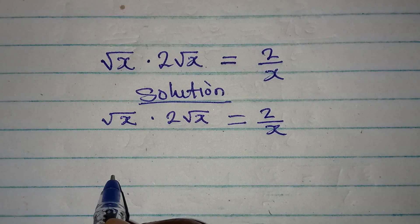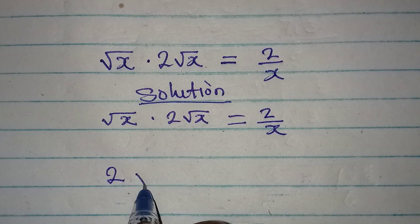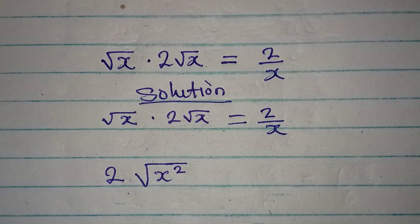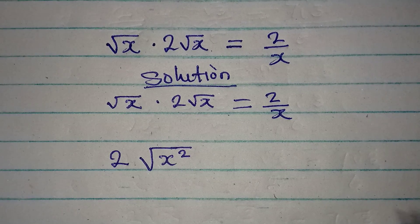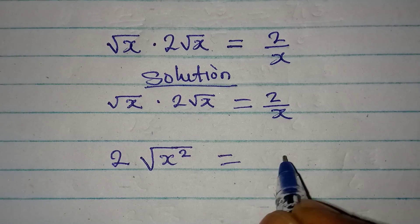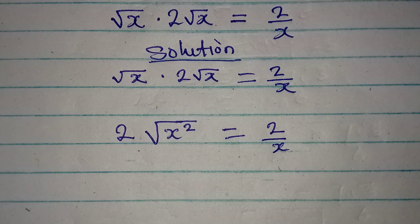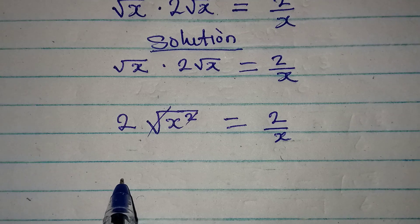This will give us 2√(x²). This is what we'll have because √x times √x will give us √(x²). This equals 2/x. Do not forget that square root and square can cancel each other, so we have 2x which is equal to 2/x.